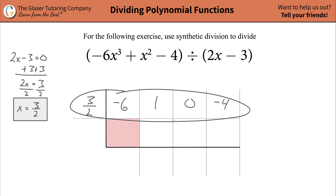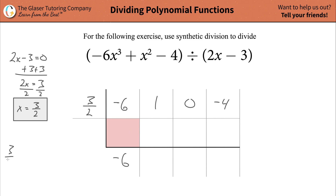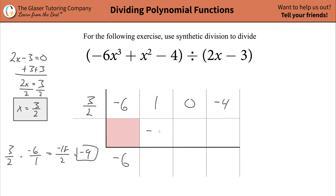Now that we have the complete top row filled out, we simply follow a series of steps. Take your first term inside the synthetic division and just drop it straight down — write negative 6. Then take that value, negative 6, and multiply it by your 3 halves: 3 over 2 times negative 6 over 1 equals negative 18 over 2, which simplifies to negative 9. Plug negative 9 into the next adjacent cell.